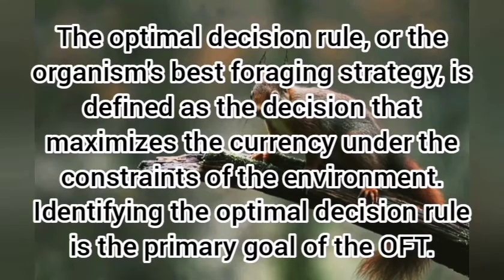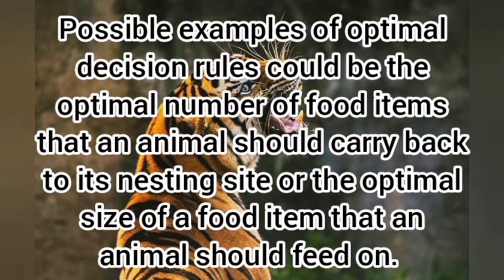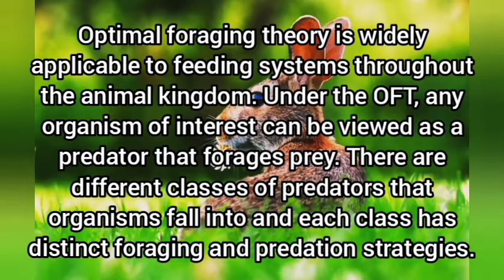The optimal decision rule, or the organism's best foraging strategy, is defined as the decision that maximizes the currency under the constraints of the environment. Identifying the optimal decision rule is the primary goal of OFT. Possible examples include the optimal number of food items an animal should carry back to its nesting site, or the optimal size of a food item to feed on. OFT is widely applicable to feeding systems throughout the animal kingdom, and any organism of interest can be viewed as a predator that forages prey.